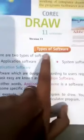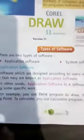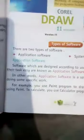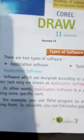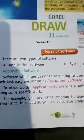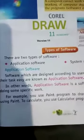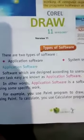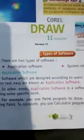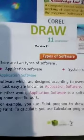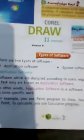Today we will start the types of software. Take out page number seven. There are two types of software: the first one is application software, and the second one is system software.